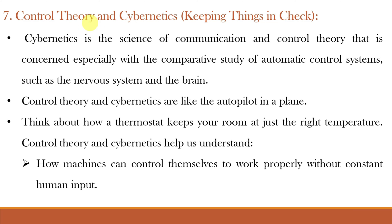Next is Cybernetics and Control Theory, which is related to keeping things in check. Cybernetics is the science of communication and control theory, concerned with the comparative study of automatic control systems such as the nervous system in the brain. Control theory and cybernetics study how systems regulate and control themselves. In AI, these disciplines are essential for developing autonomous systems that can make decisions and adapt to changing environments. For example, a thermostat keeps our room at just the right temperature without constant human input, and self-driving cars rely on control theory and cybernetics principles to navigate safely and efficiently.